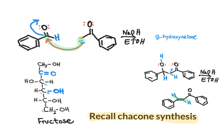Recall that the synthesis of chalcone done in the lab is an aldol condensation reaction. It is a mixed aldol because we use a ketone and an aldehyde, and the initial product is a beta-hydroxyketone. We can parallel the structure of a beta-hydroxyketone with a fructose molecule that, for this purpose, will be phosphorylated on carbon number 1 and carbon number 6. We can see that we have a beta-carbon hydroxyl group similar to the product of the aldol condensation in the synthesis of chalcone.